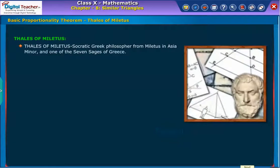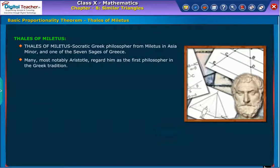Thales of Miletus, Socratic Greek philosopher from Miletus in Asia Minor and one of the Seven Sages of Greece. Many, most notably Aristotle, regard him as the first philosopher in the Greek tradition.